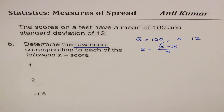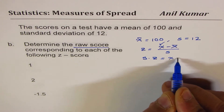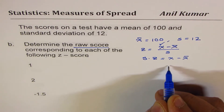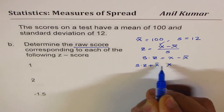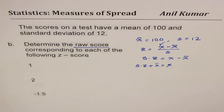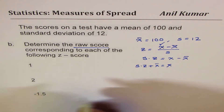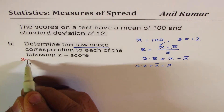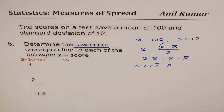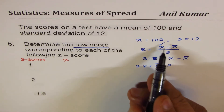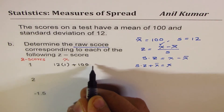Since we need to find the raw score, we will rearrange the formula. Standard deviation times Z-score equals X minus the mean value, and the raw score X equals standard deviation times Z-score plus the average value. That's the formula to be applied. Applying this: standard deviation is 12, mean is 100, so 12 times 1 plus 100 gives us this value.